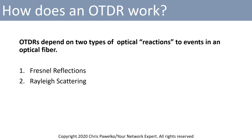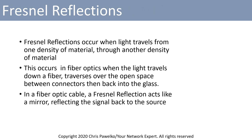OTDRs depend on two types of optical reactions to events in an optical fiber. The first one is Fresnel reflections, and the second one is Rayleigh scattering. Fresnel reflections occur when light travels from one density material through another density material. This occurs in fiber optics when the light travels down a fiber, traverses over the open space between the connectors, and then back into the glass. In an optical fiber, a Fresnel reflection acts like a mirror reflecting the signal back to the source.